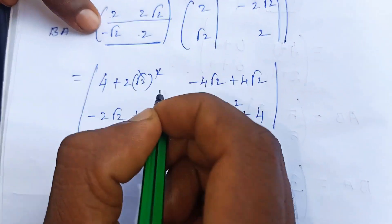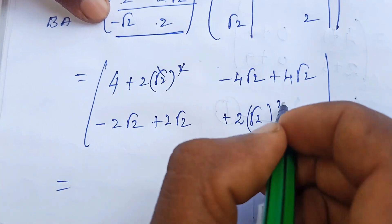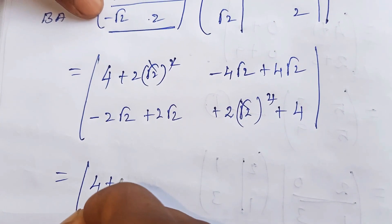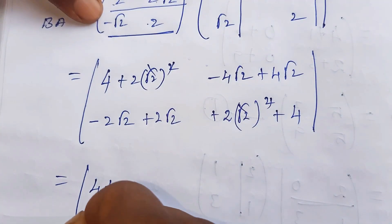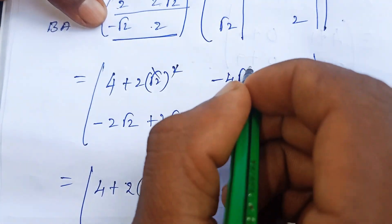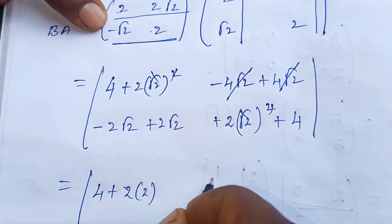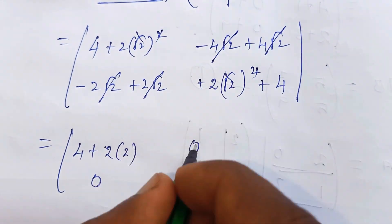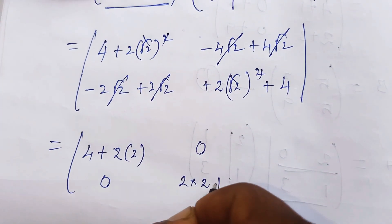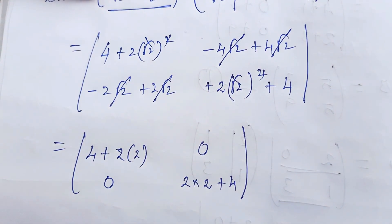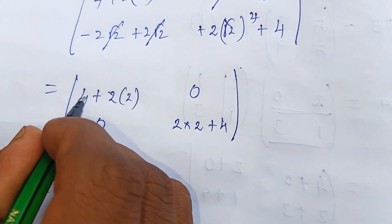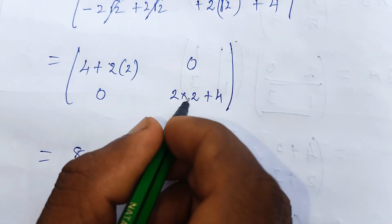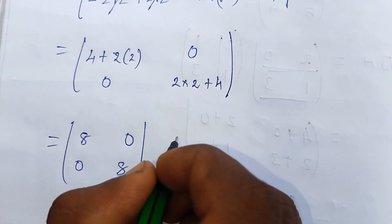After simplification, the positive and negative terms cancel to give zero for the off-diagonal entries. So AB gives: first row first column 4+4 = 8, first row second column = 0, second row first column = 0, second row second column 4+4 = 8. So AB = [8, 0; 0, 8]. This is equation number one.